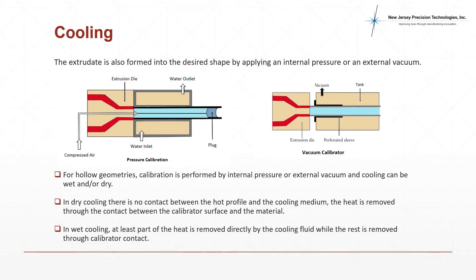In the case of hollow geometries, compressed air is passed through the extrudate to provide internal pressure which forces the extrudate against the walls, forming the desired shape. In the case of vacuum calibrators, a vacuum pump absorbs heat through a perforated sleeve inside which the extrudate passes. The entire process is done inside a tank which encloses the flow of the extrudate. The cooling can be either wet, dry, or done through calibrator contact.